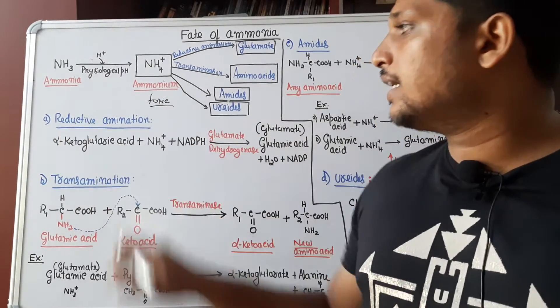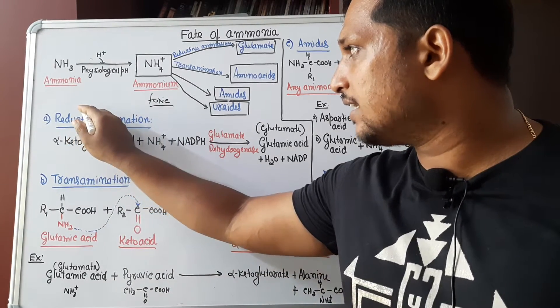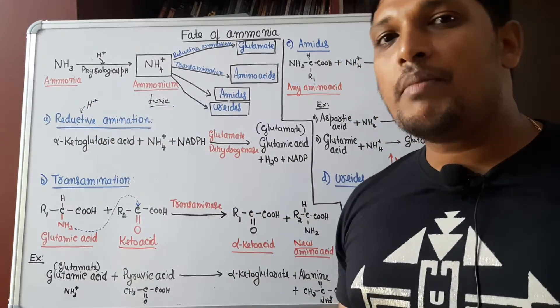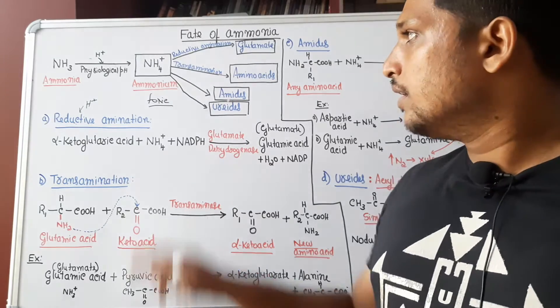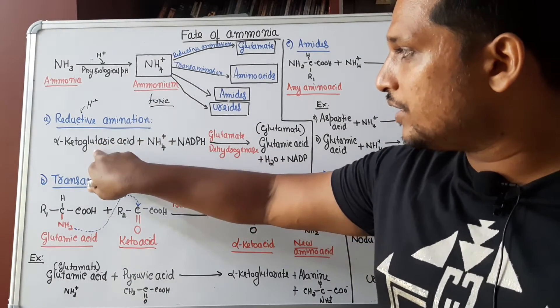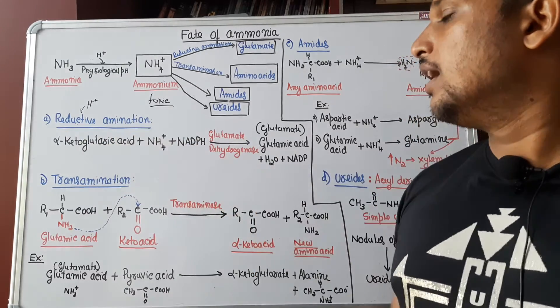First fate, reductive amination. As the name itself indicates, there is reduction. Reduction refers to addition of hydrogen as well as amination means introduction of amino group. Ammonium ion formed, it is introduced into alpha-ketoglutaric acid. That is amination, introduction of amino group.